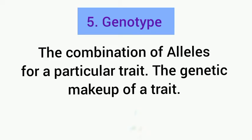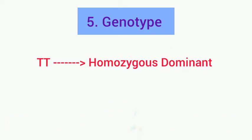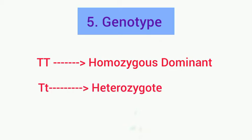For genotype — genotype is a combination of alleles for a particular trait; it is also called the genetic makeup of a trait. So if I combine capital letter T and small letter t, I will have a new genotype Tt — that is the genetic makeup.